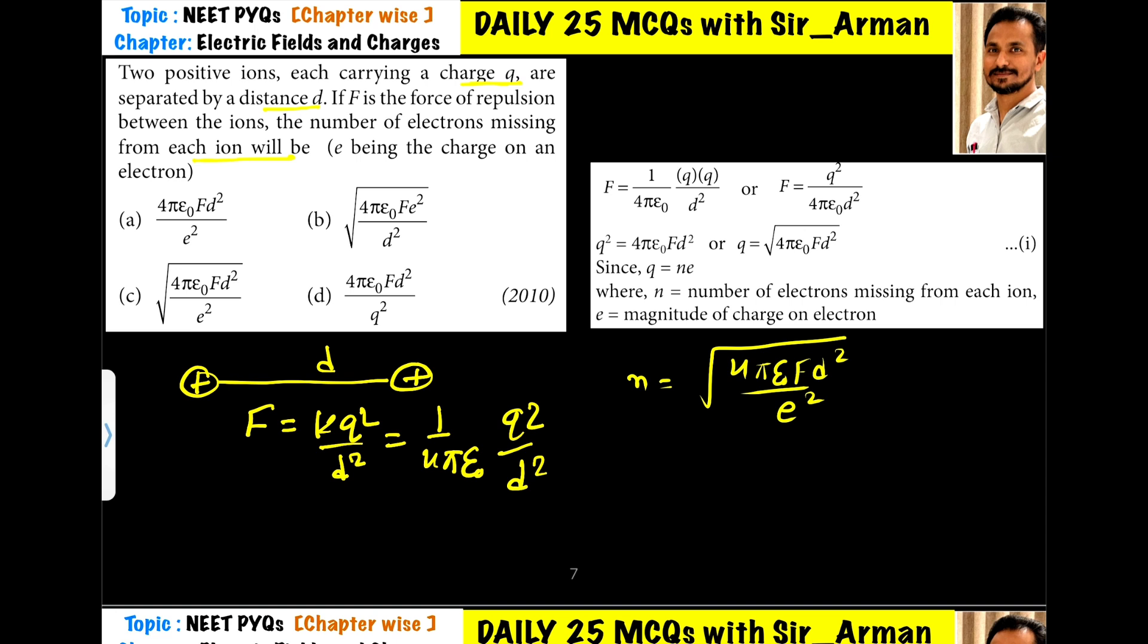As per the question, if F is the repulsive force between them, the number of electrons missing from each ion will be found using q equals n e, where e is the charge of one electron. So n equals charge by e. If we find q from this, then we can easily find the number of electrons.